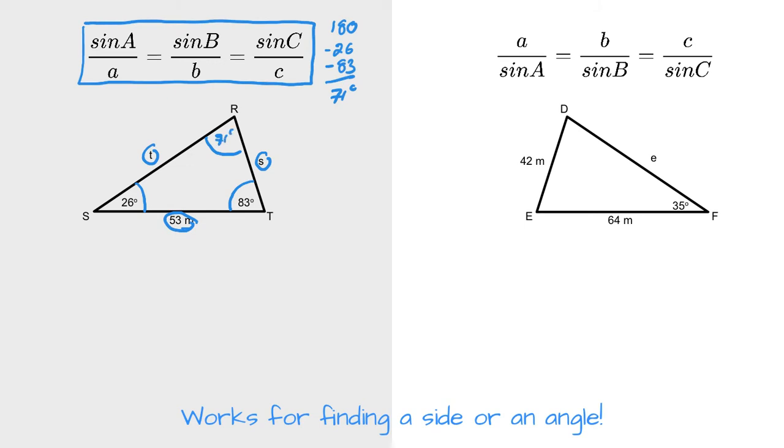I'm going to try to find all of the sides and all of the angles. I'm going to use sine law. So I'm going to set up my full ratio, comparing sine 26 to my unknown side of S, sine 83 to my unknown side of T, and sine 71 to my known side of 53. You can see I have one complete ratio and two ratios that are incomplete. So I'm going to use my complete ratio now to solve.